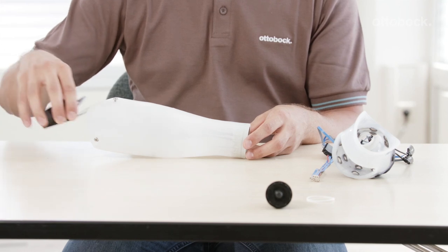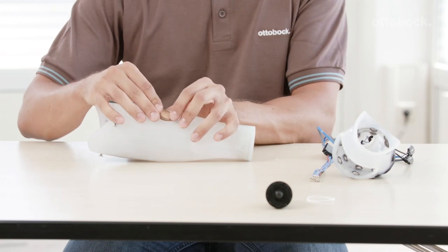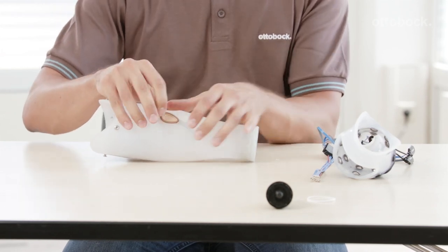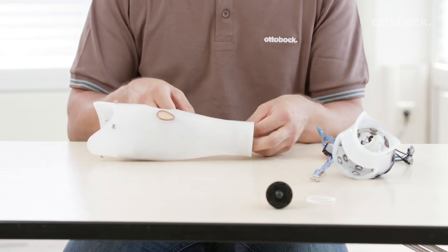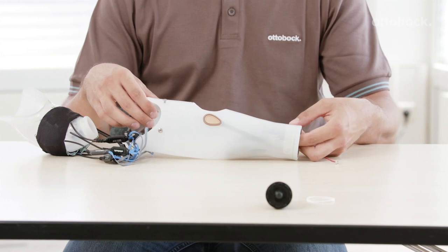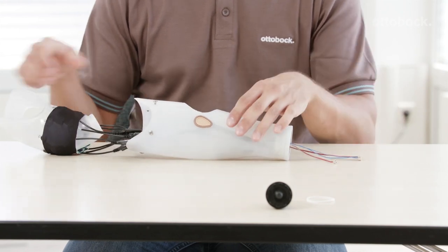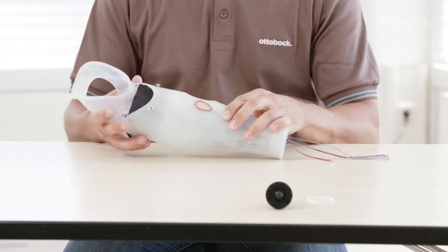Next, insert and fix the Myo Energy Integral battery between inner and outer socket and mount the charging receptacle. When assembling the inner and outer socket, take care not to damage electrode cables.